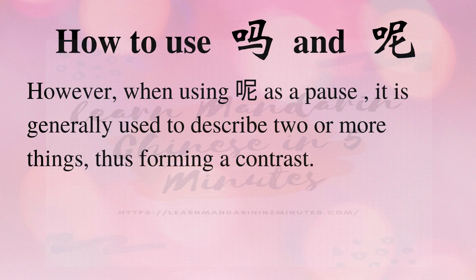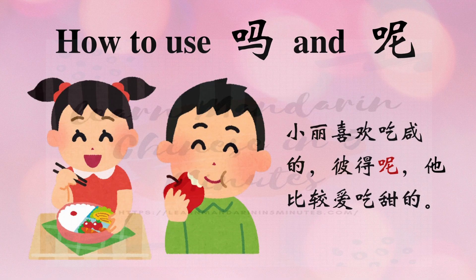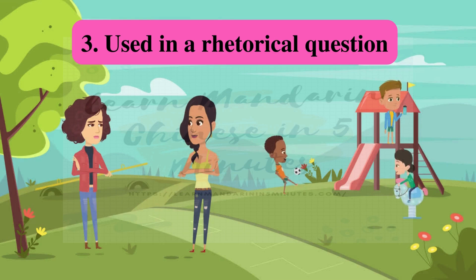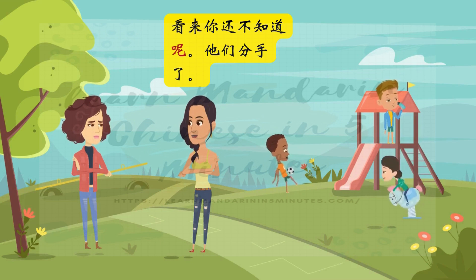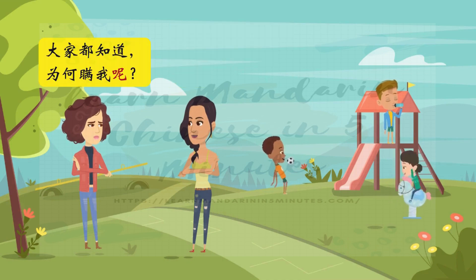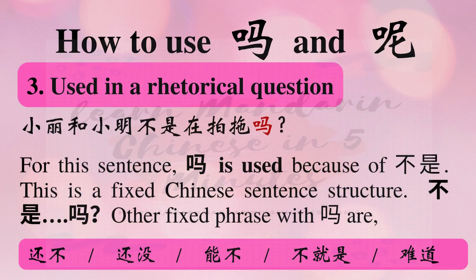However, when using 呢 as a pause, it is generally used to describe two or more things, thus forming a contrast. For example: 比德和玛丽不是在拍拖吗? 看来你还不知道呢，他们分手了。大家都知道，为何忙我呢?